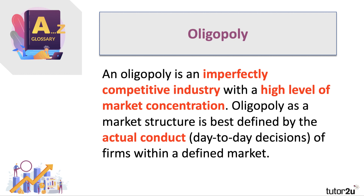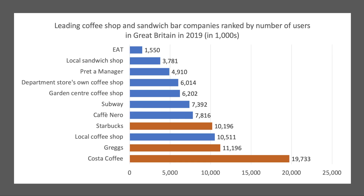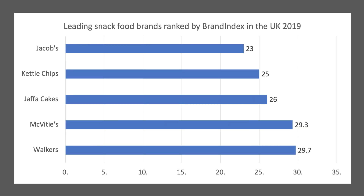A good example is the coffee market. Although there are thousands of firms across local coffee shops and department stores, the coffee market is essentially an oligopoly in the UK, dominated by big players such as Starbucks, Greggs, and Costa Coffee — which was bought by Coca-Cola — as well as Pret, Subway, and Caffè Nero. On the surface there's lots of competition, but it is essentially an oligopoly.